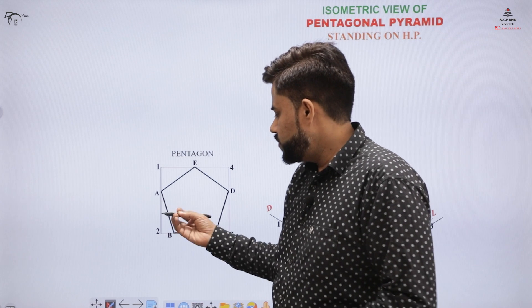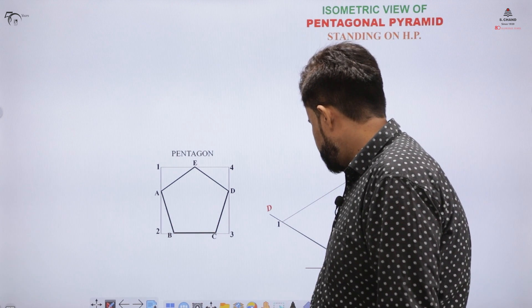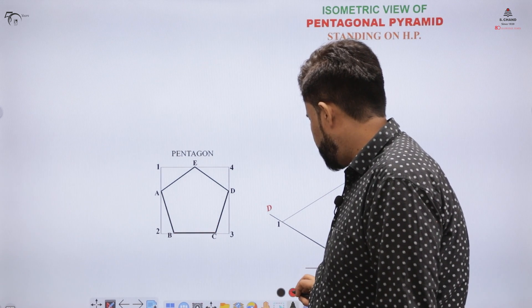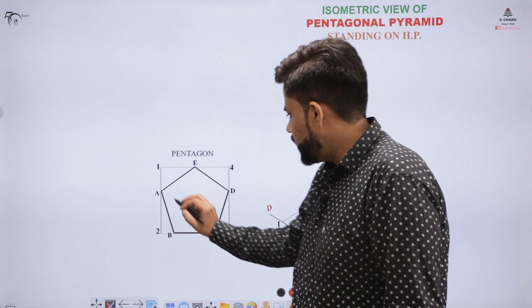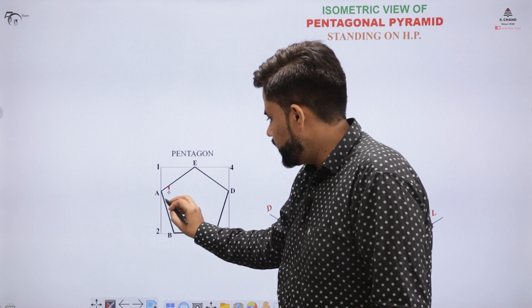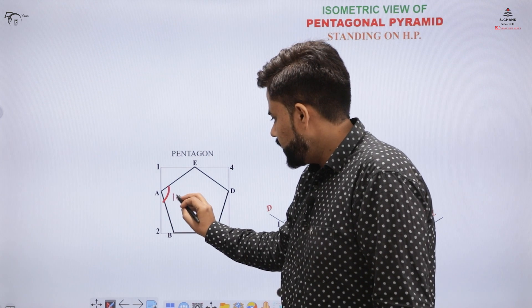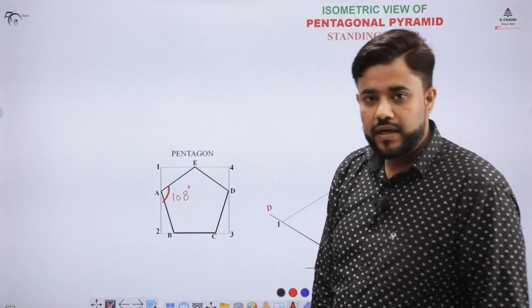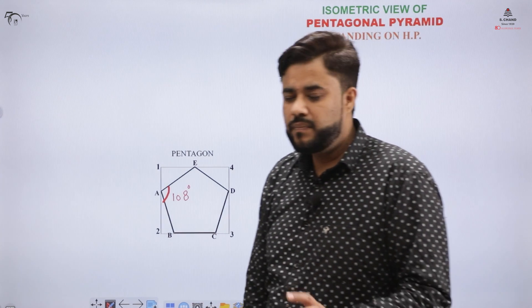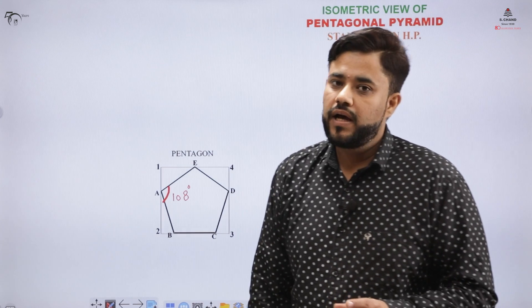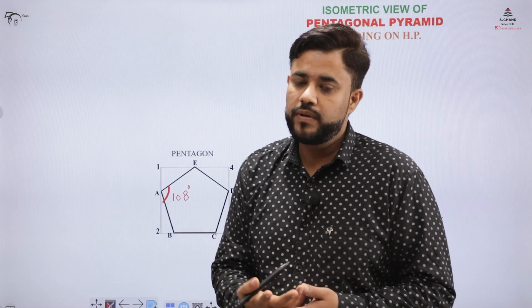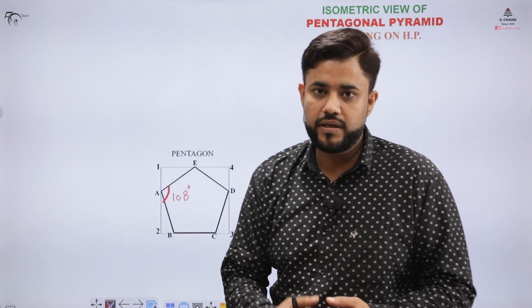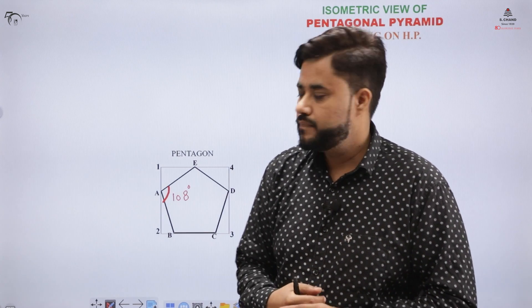As you know, the interior angle of a regular pentagonal pyramid is 108 degrees. How is it 108 degrees? That involves a simple concept. I want to hear from you about how it is 108 degrees — if you know the answer, you can comment in the comment section below.